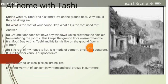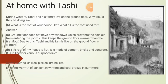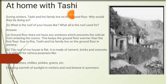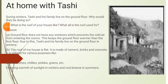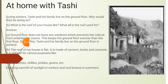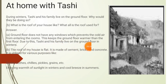He reached the home of Tashi. During winter, Tashi and his family live on the ground floor. The ground floor does not have any windows, which prevents cold air from entering the rooms and keeps the ground floor warmer than the first floor. Due to this, Tashi and his family live on the ground floor in winter. This is the picture of Tashi's house where Gaurav Jani stayed for a few days.